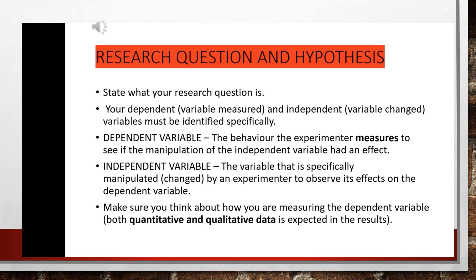Below are some examples you could use and change the wording to meet your required topic. The dependent variable is the behavior the experimenter measures to see if the manipulation of the independent variable had an effect. The independent variable is the variable specifically manipulated or changed by an experimenter to observe its effects on the dependent variable. Make sure you think about how you are measuring the dependent variable — look for both quantitative and qualitative data, and consider what is expected in your results.